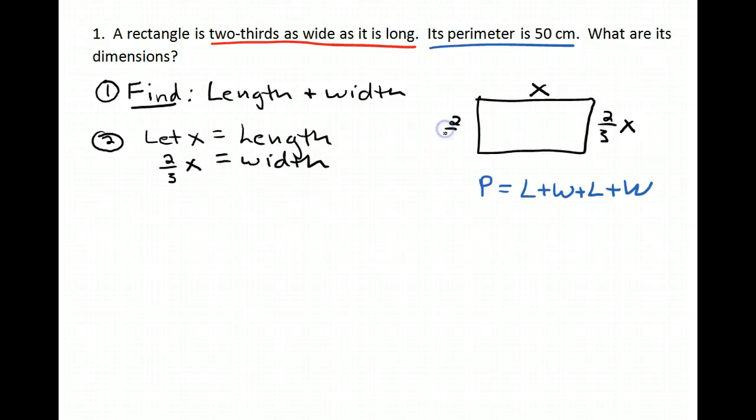if it's a rectangle, this is also two-thirds x and this is x. If you want to use a little simplified formula, you could say the perimeter is two lengths plus two widths. That's what I'm going to use here.